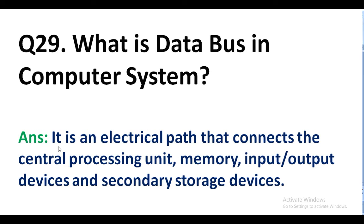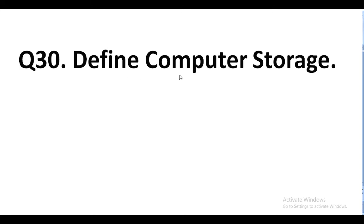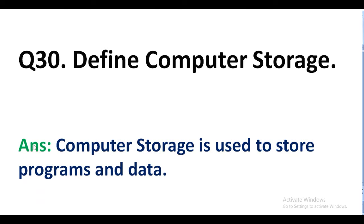Question number 29. What is a data bus in a computer system? Answer. It is an electrical path that connects the central processing unit, memory, input/output devices, and secondary storage. Question number 30. Define computer storage. Answer. Computer storage is used to store programs and data.